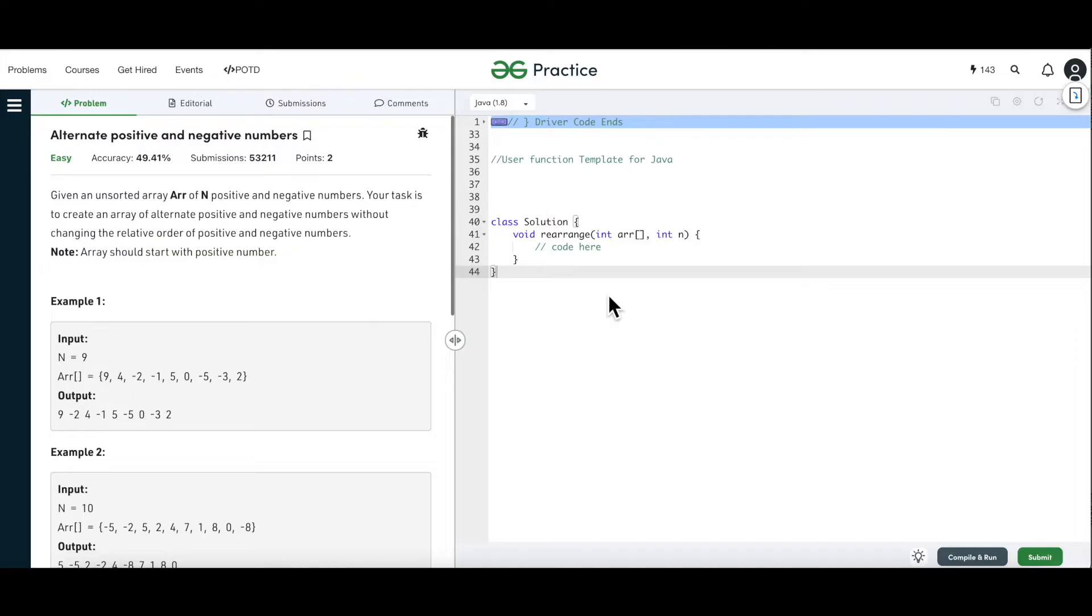In this, we are given an unsorted array which consists of both positive as well as negative integers and we have to rearrange the same array without changing the relative order of the negative and the positive numbers but it should start with a positive number followed by a negative number and so on. As we can see in the output it starts with a positive integer followed by a negative integer and then again a positive integer followed by a negative integer and so on.